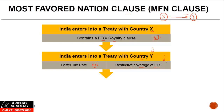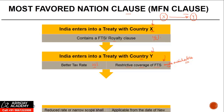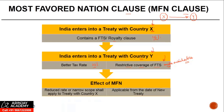For example, it says that FTS will be taxable in India only when it is satisfying the make available condition — something which we discussed earlier. In such a case, if the original treaty which India had with Country X had a Most Favored Nation clause, then the reduced rate of 10%, or the narrow scope which is the make available clause, shall also apply to the treaty with Country X. And it is going to be applicable from the date of the new treaty, not from the date when the original treaty was entered into.